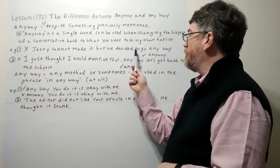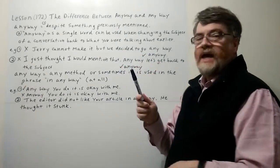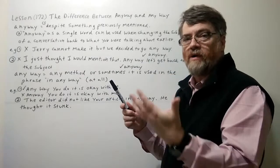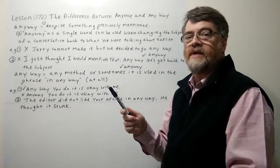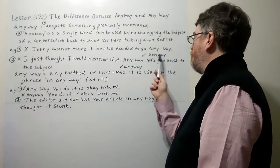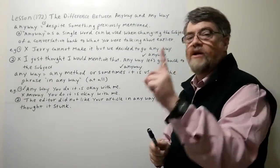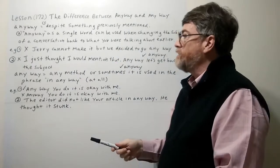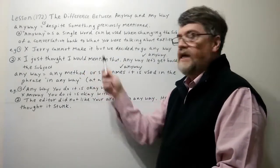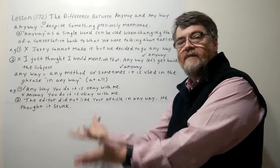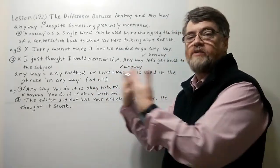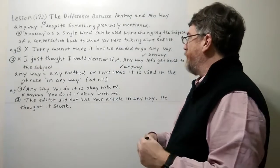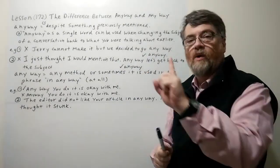'Jerry cannot make it, but we decided to go anyway.' If you use 'any way' here as two words, this would be wrong because then it would mean 'any method,' which doesn't make sense. It should be 'anyway' as a single word, going back to the meaning of 'despite something previously mentioned.' Jerry cannot make it, but despite that fact, we are going anyway — we are still going to go. So in that situation, 'anyway' should be one word.